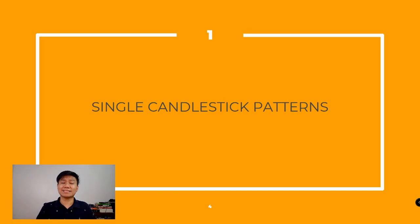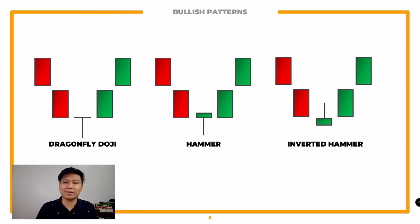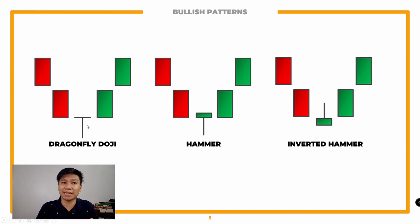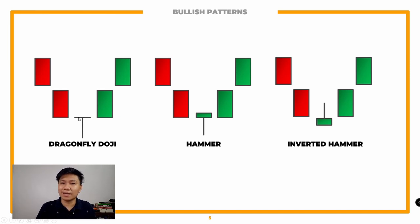Let's go through yung mga single candlestick patterns — ano yung point at how do you use each particular pattern. For bullish patterns, meron tayong dragonfly doji, hammer, at inverted hammer. Kapag naka-downtrend, it's a sign of reversal if you see these candlestick patterns. For the dragonfly doji, yung entry at closing price for that day is nag-close lang doon sa opening — maliit lang yung difference — meaning sobrang lakas ng buying pressure. To validate, you need a green candlestick the following day to confirm the reversal.